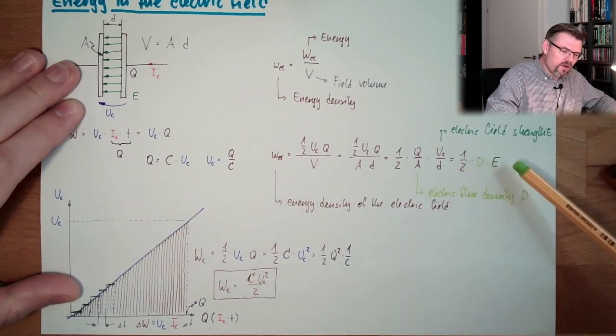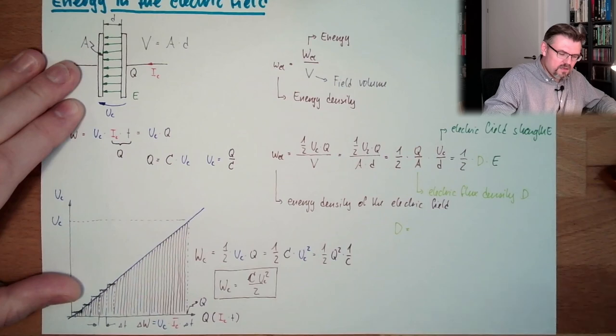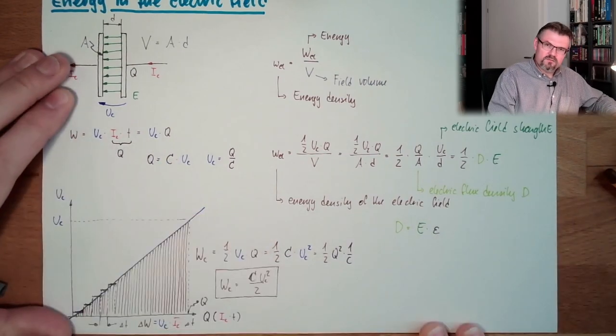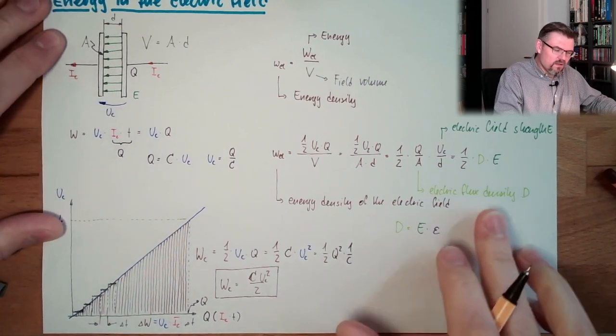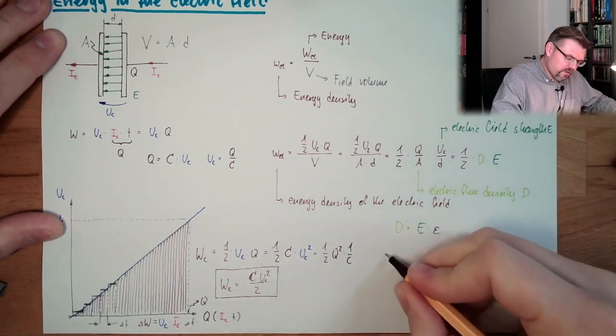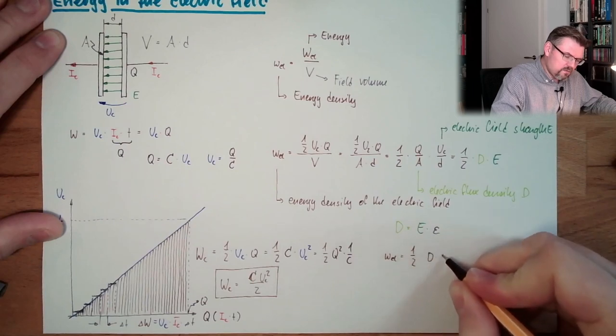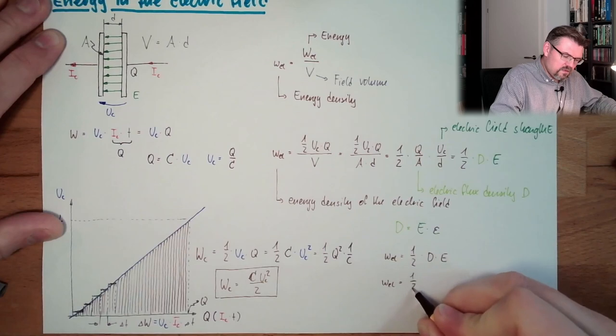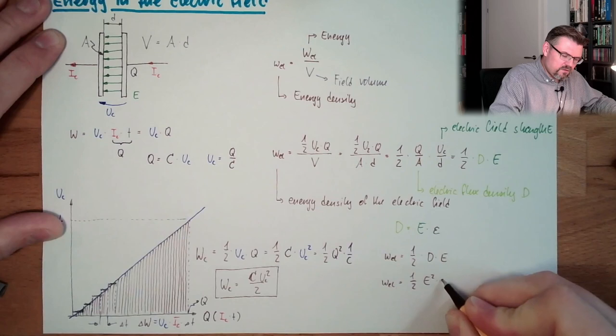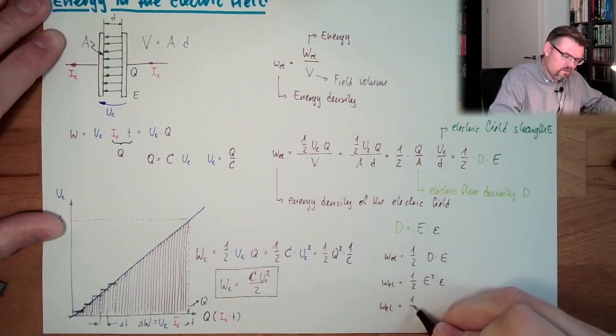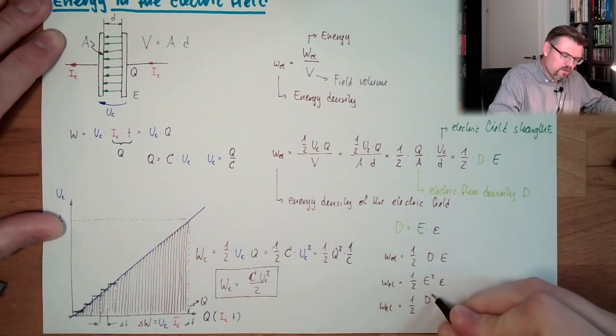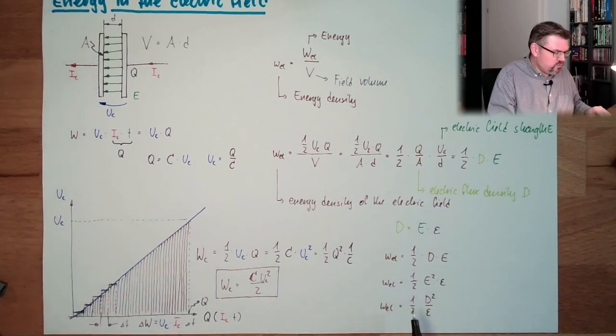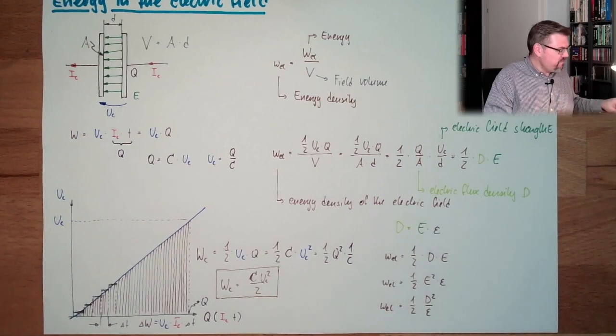And since we know that those two have a relationship with D equals E multiplied by some factor epsilon, depending on the material in between, then we could write this into different forms. So we can say that's this. And then another form would be, if we say D is E multiplied by epsilon, it's E squared epsilon, or if we bring this to the other side, D squared divided by epsilon. It's all the same. So this is how you can calculate, if you only know one of those parameters, you use this. And this is how you can calculate the density, the energy density of the electric field.